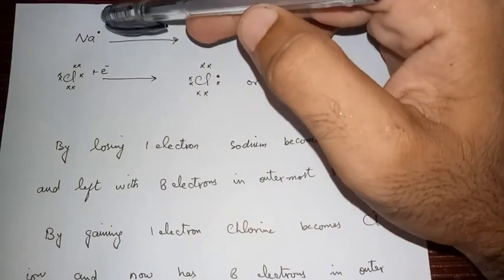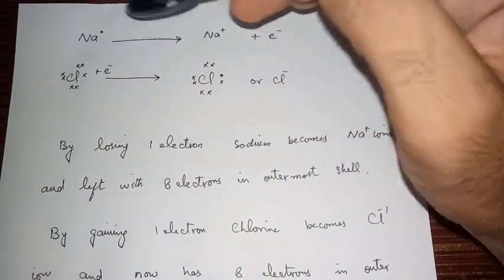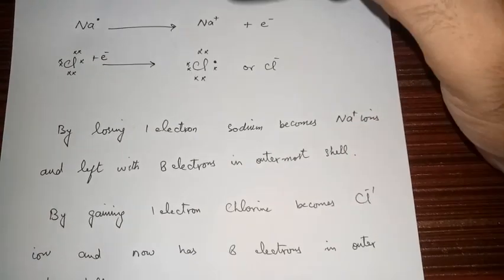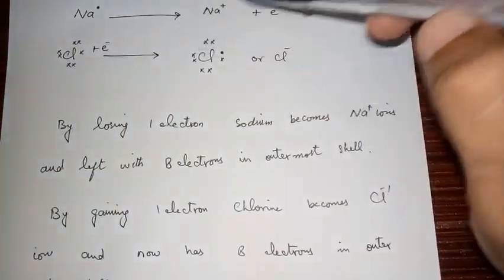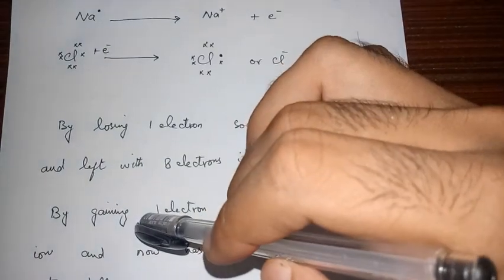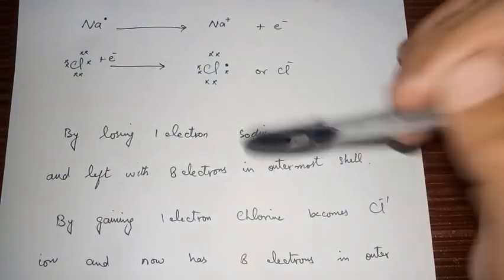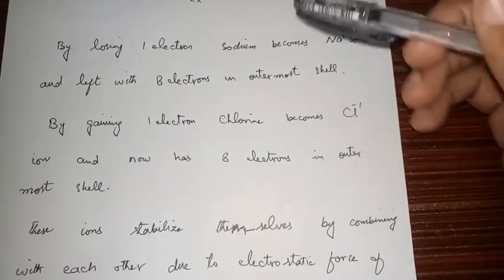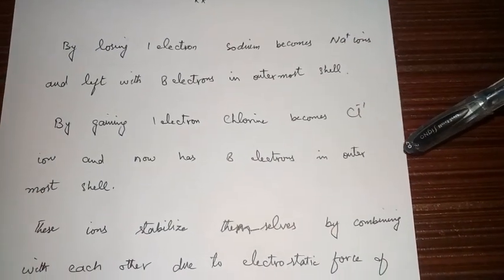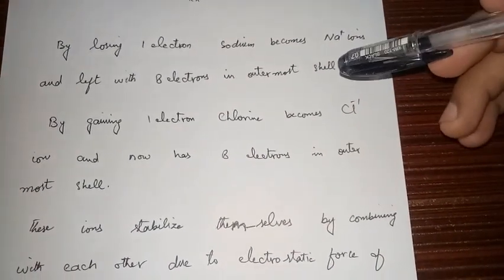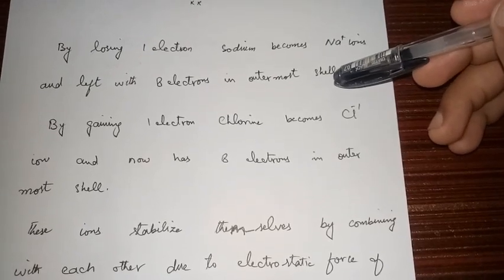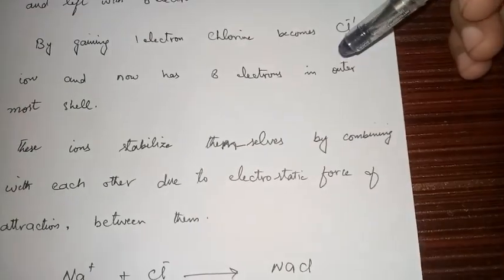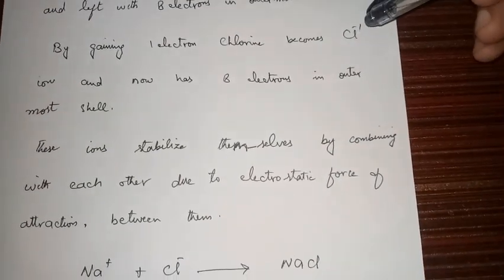Sodium has one electron in its valence shell. It loses that one electron and forms a sodium ion. Chlorine accepts the electron lost by sodium and forms a chloride ion, which is negatively charged. By losing one electron, sodium becomes a sodium ion and is left with eight electrons in its outermost shell, so its octet is now complete.